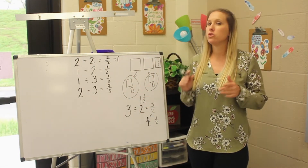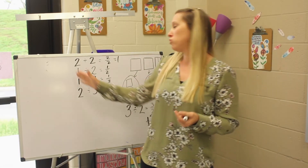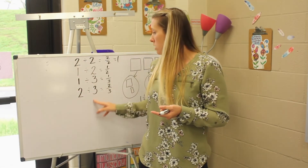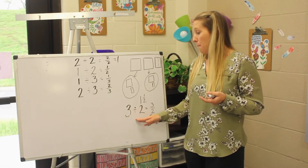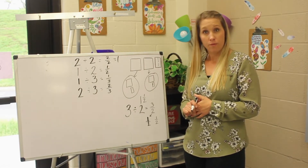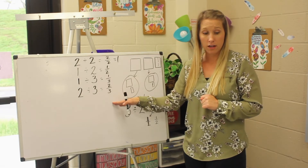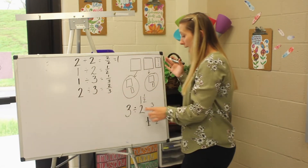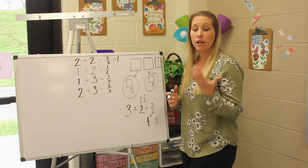Before we started this problem I asked you to see if you noticed anything different. Did you notice that the problems we started with had a first number smaller than or equal to the second number? Whereas in this problem, our first number is bigger than the second. When I started with a smaller number, I ended up with a fraction smaller than one, because I had less pieces than I was sharing with. Whereas in the second situation I had more, so everybody could get at least one whole.